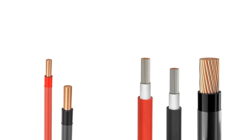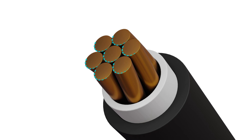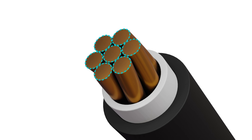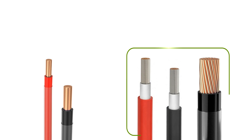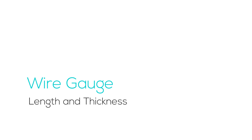You might come across solid core cables and stranded cables. Stranded cables, having more strands, naturally have more surface area for current to flow, which often means they conduct electricity better than solid core counterparts. Because they're flexible, stranded cables are a top pick for solar power setups.